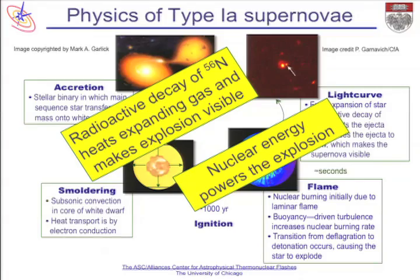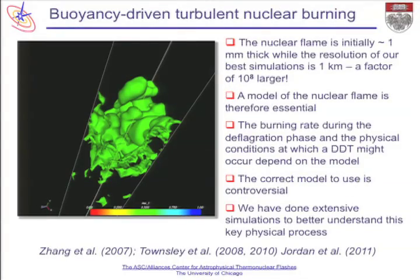The turbulent nuclear combustion is a key physical process but it's very challenging. The sizes of the stars we deal with are the size of the Earth—about 2,200 to 2,300 kilometers in radius. But at the start, in the core of the star, the nuclear flame is about a millimeter thick. I was once asked when we were proposing our center to DOE: do you really need large-scale computations?